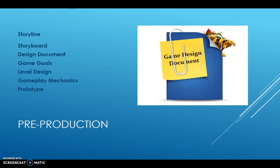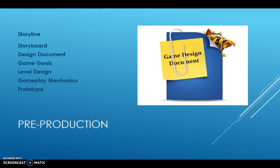Pre-production is where the development team starts working together on the various aspects of your game. A big part is the storyline — the artist would start storyboarding the narrative. You'd create a design document, which we'll go into in more detail. You define what the goals of the game are: all games have goals, both short-term and long-term. The long-term goal could be to rescue the princess; the short-term goal would be to finish the level. Level design and gameplay mechanics — the game rules — also start here.